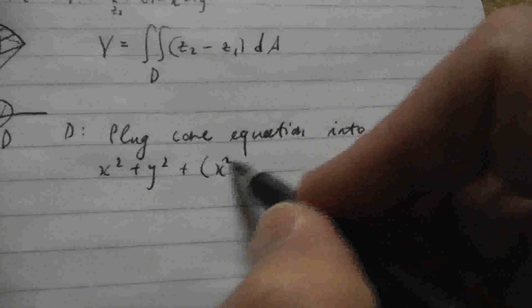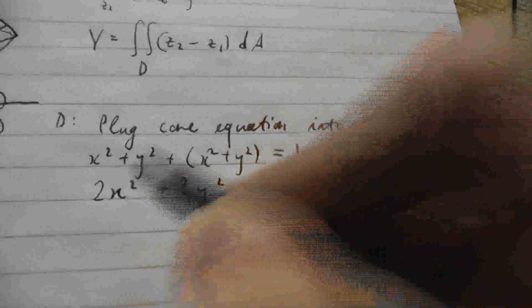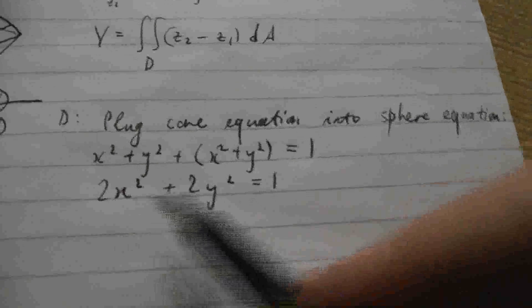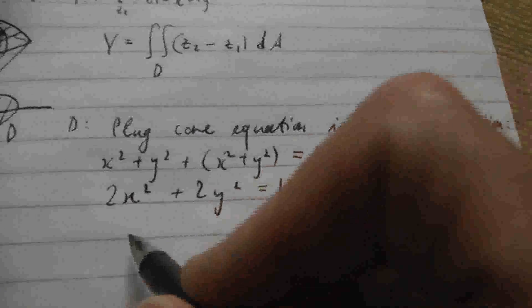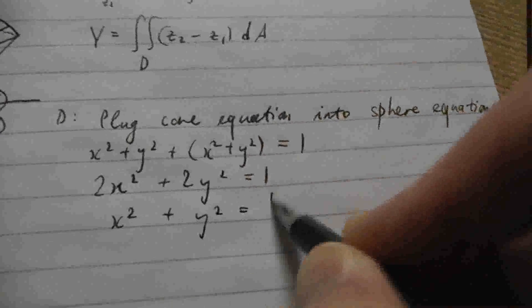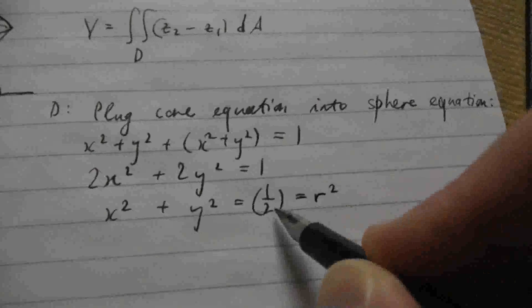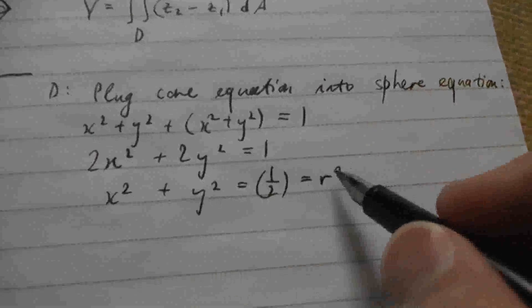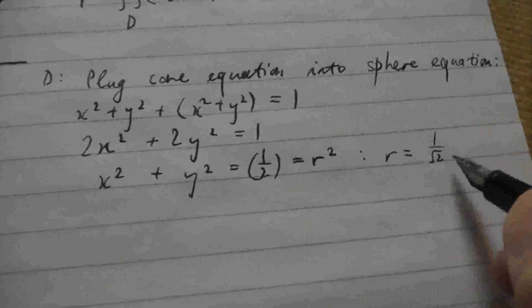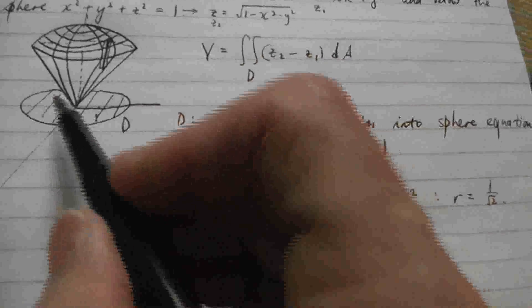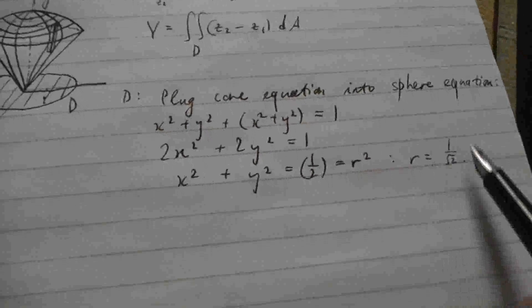So if we do this to get the boundary of this region d, then we'll get x squared plus y squared plus z squared is the square of the square root. So that's x squared plus y squared. And all of this equals 1. So 2x squared plus 2y squared equals 1. And, well, you know this is a circle. What's the radius? Well, the right-hand side here, x squared plus y squared equals something, this is r squared. So the radius is 1 over root 2.